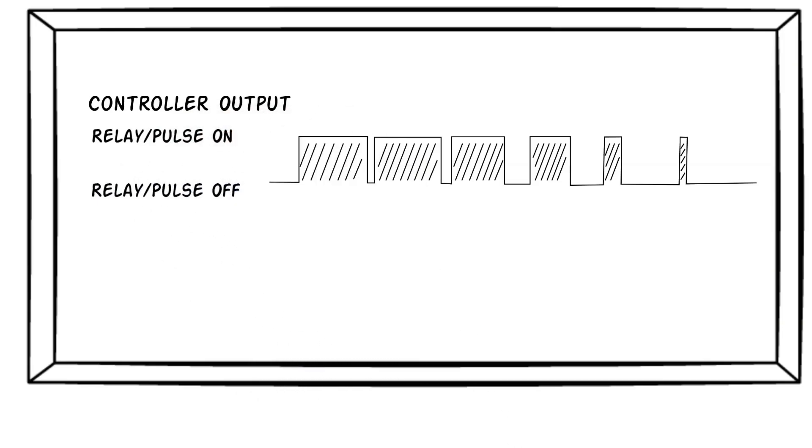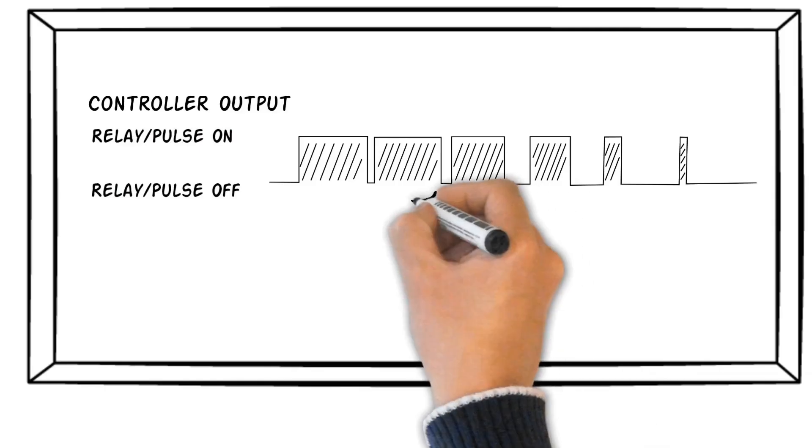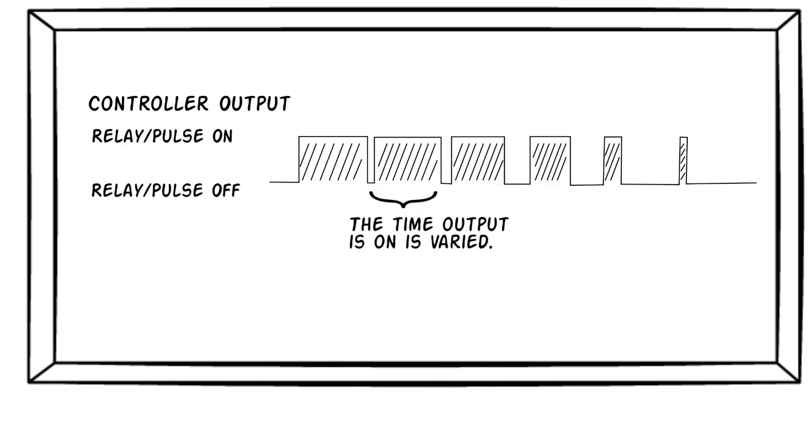The amount of time that the output is on is varied to provide more precise control. This control is called time-proportioning control.